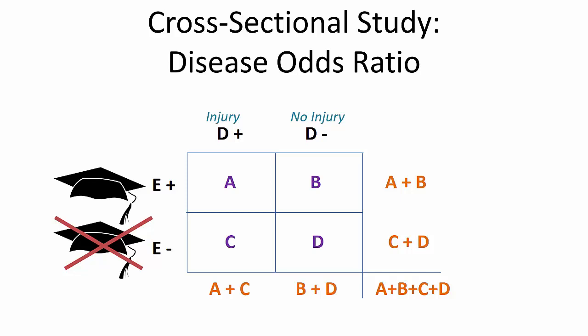Let's start by filling in the A, B, and A plus B cells for the exposed, or for those with the college degree. Now we'll fill in the C, D, and C plus D cells for the unexposed. And finally, for the column totals, A plus C and B plus D, as well as the grand total, A plus B plus C plus D.